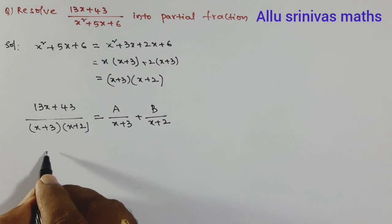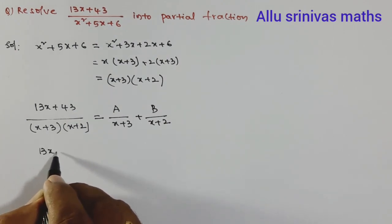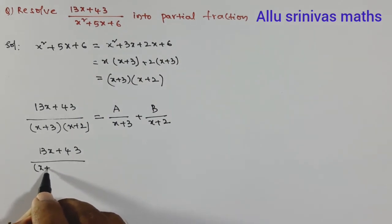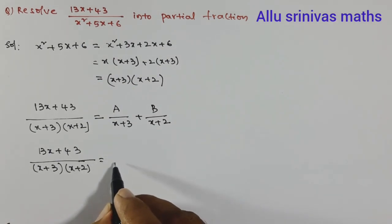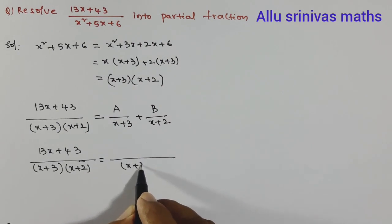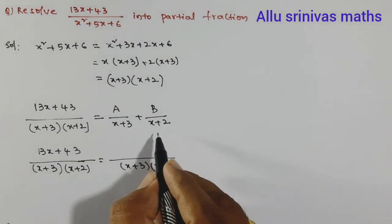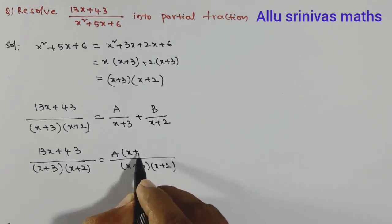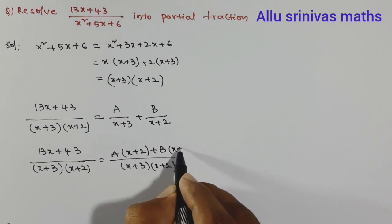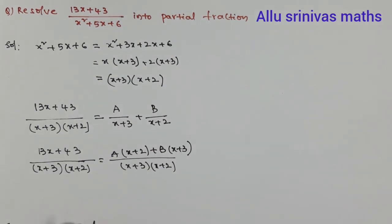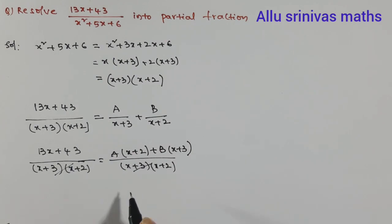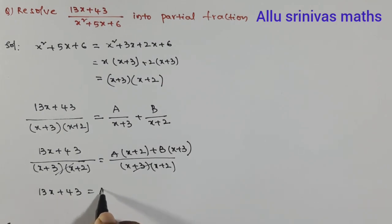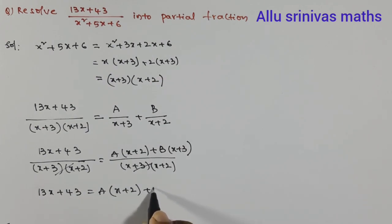We write the left-hand side: (13x+43) divided by (x+3)(x+2). Taking LCM of the two fractions, the LCM is (x+3)(x+2), which can be written as A multiplied by (x+2) plus B multiplied by (x+3). Since both denominators are equal, we cancel them, giving: 13x+43 = A(x+2) + B(x+3). Let us call this equation 1.